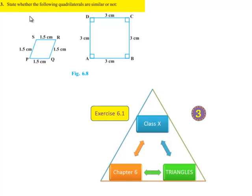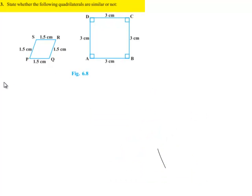Moving on to the third question: state whether the following quadrilaterals are similar or not. Now moving on to the solution — the two quadrilaterals given have sides in proportion.